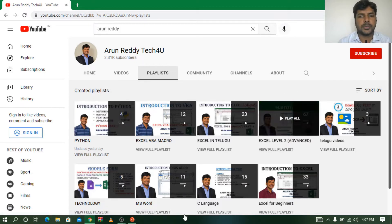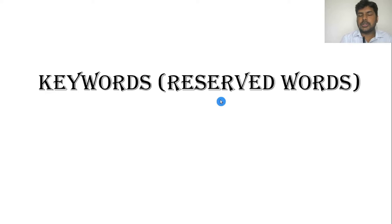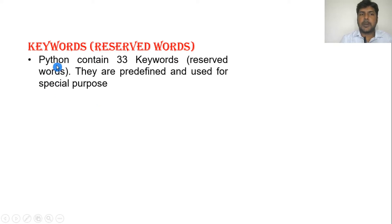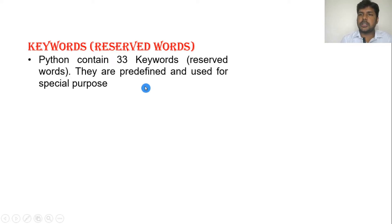Coming to our topic, keywords are also called reserved words. Python contains 33 keywords. These keywords are predefined and used for a specific purpose. That means these 33 keywords are used only for a specific purpose — they cannot be used for any other purpose.